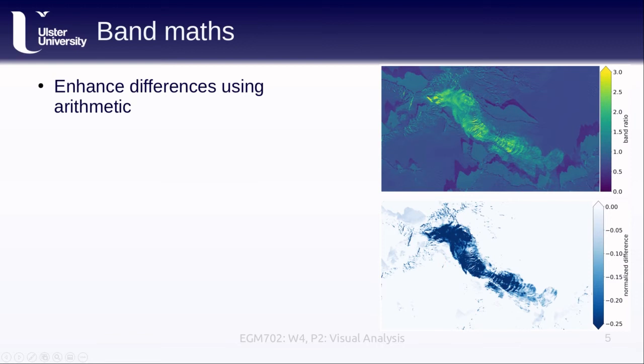Much like with single image analysis, we can use band math to enhance the differences between our two images. On the top here, I have a band ratio where I've divided the February 7th image by the March 2nd image. Pixel values close to one correspond to pixels that are about the same in each image. Pixel values above one correspond to areas where the March 2nd image is darker than the February image. And pixel values below one correspond to areas where the March 2nd image is brighter than the February image. You can see the rock avalanche highlighted very clearly here. Underneath this, I have a normalized difference index where I've taken the March 2nd image minus the February 7th image and divided by the sum of the two.